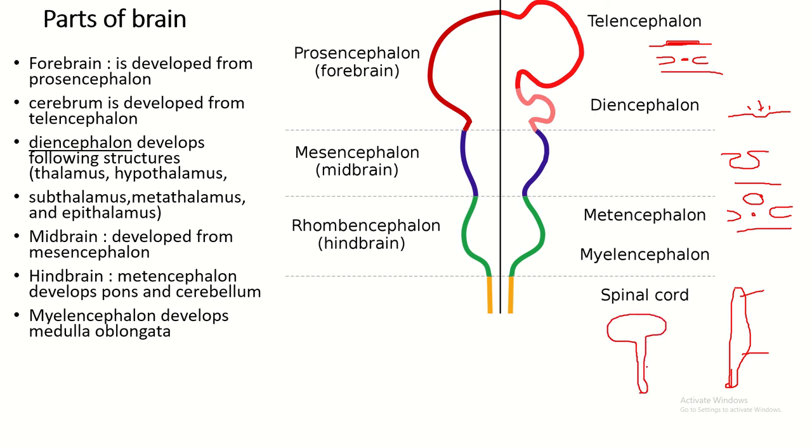The cranial part is divided into three vesicles: the prosencephalon, mesencephalon, and rhombencephalon. These brain vesicles again divide into telencephalon and diencephalon. From telencephalon, the cerebrum is developed.